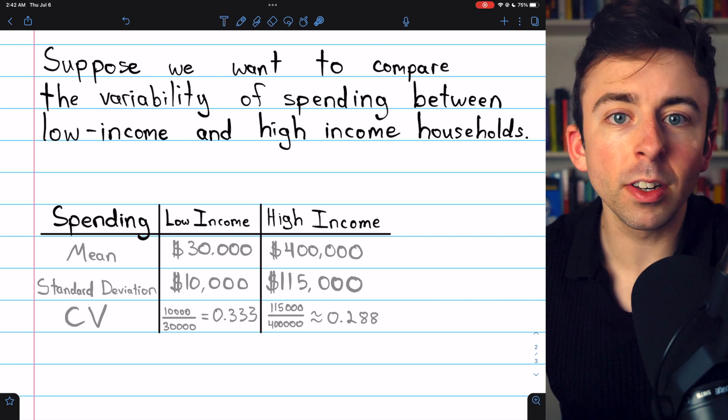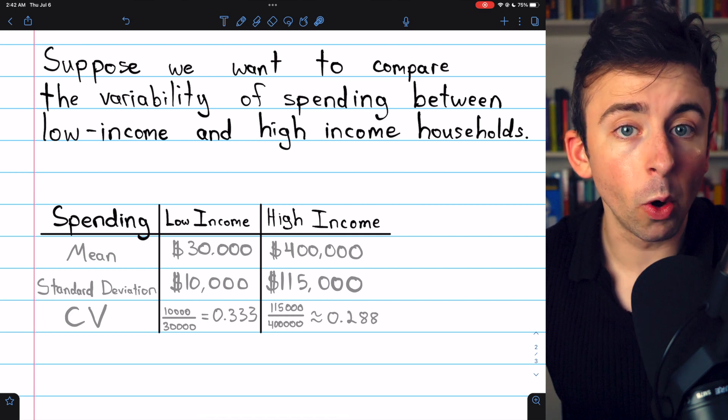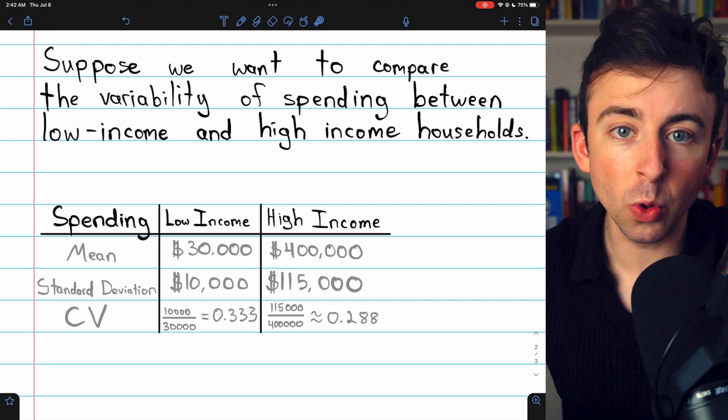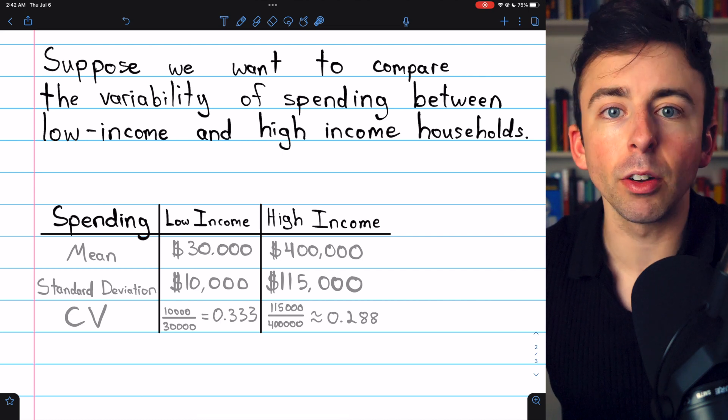So if we calculate the coefficient of variation, that can give us a better comparison, because the coefficient of variation is unitless, and so it is a fair comparison, even though the means are very different.